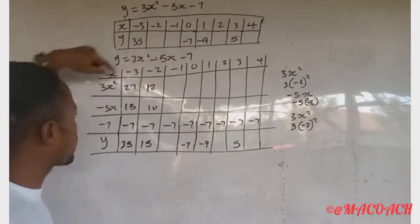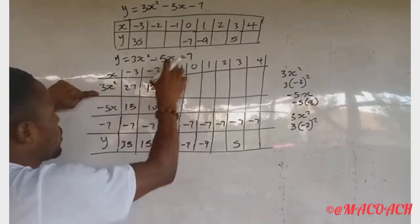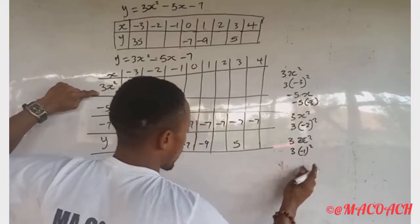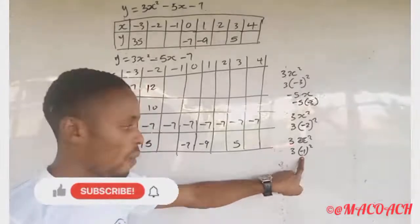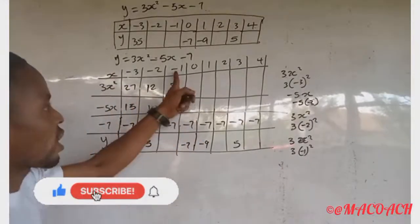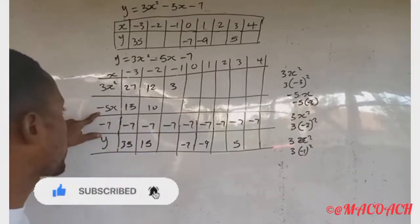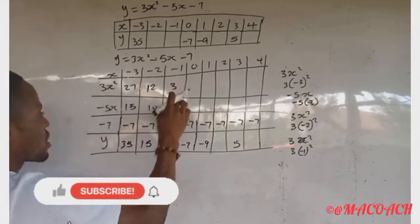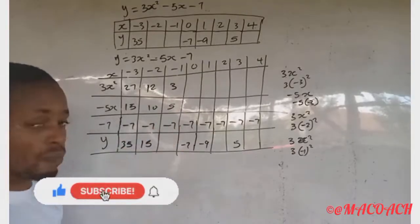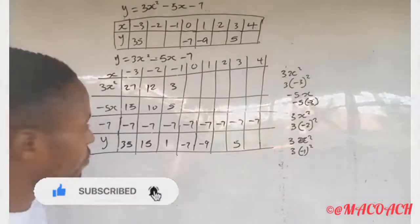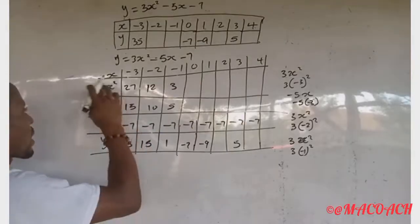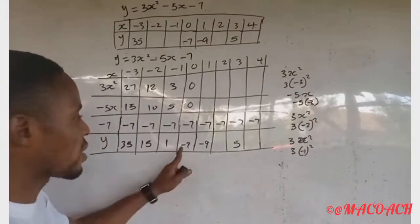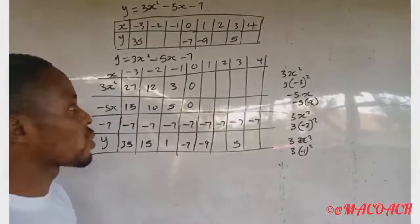When s equals minus one: three times (minus one) squared equals three times one, which is 3. Minus five times (minus one) gives plus five. So 3 plus 5 minus 7 equals 1. Y equals 1 when s equals minus one. When s equals zero: everything with s becomes zero, so zero plus zero minus seven gives minus seven. That's how we get minus seven in the table.